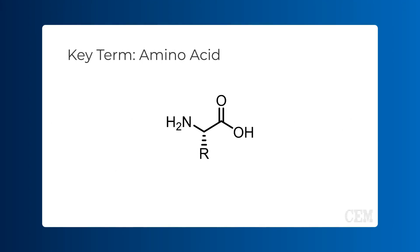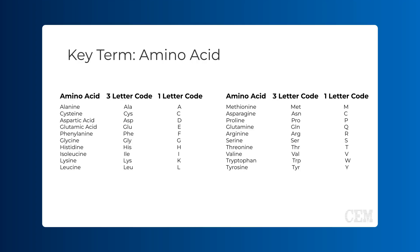Amino acids are small organic molecules that serve as the building blocks of proteins and peptides. Each amino acid consists of an amino group (NH2), a carboxyl group (COOH), and a specific side chain, or R group, which determines an amino acid's unique properties. There are 20 standard amino acids, each having a specific R group, name, three-letter abbreviation, and one-letter abbreviation. Though amino acids with other R groups exist — both nature-based and man-made — these 20 standard amino acids are by far the most common.